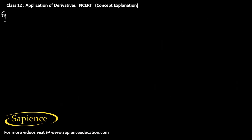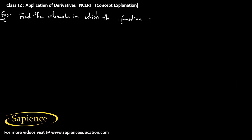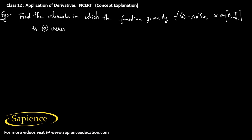We can solve one more example. Find the intervals in which the function given by f(x) = sin x + cos x, where x belongs to the closed interval [0, 2π], is increasing or decreasing.